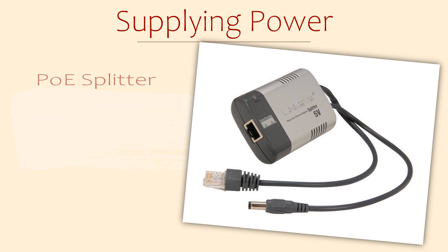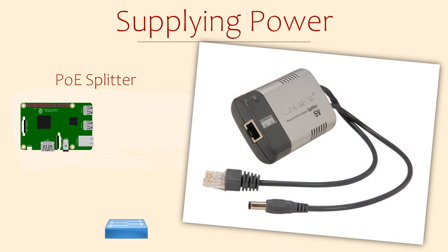Similar to an injector, you can also get a PoE splitter. This is where you have something providing power, but the device doesn't natively support being powered through PoE. For example, a Raspberry Pi — it has a power source that's separate to the network interface. So a PoE splitter will separate the power from the data, allowing you to plug in both cables separately.